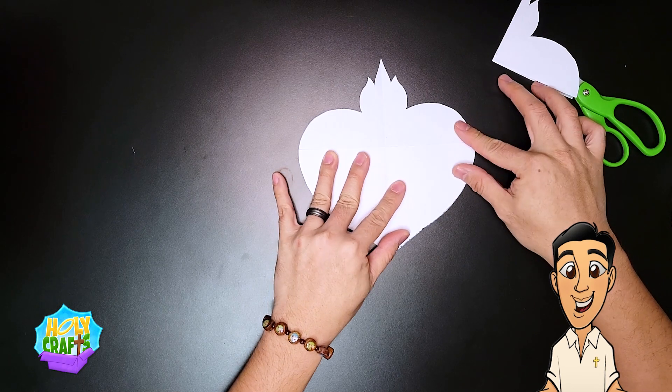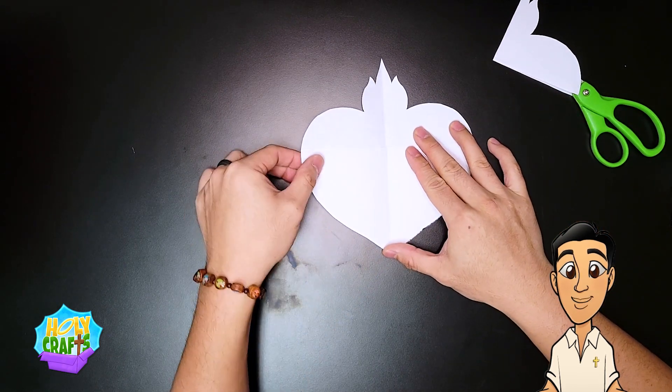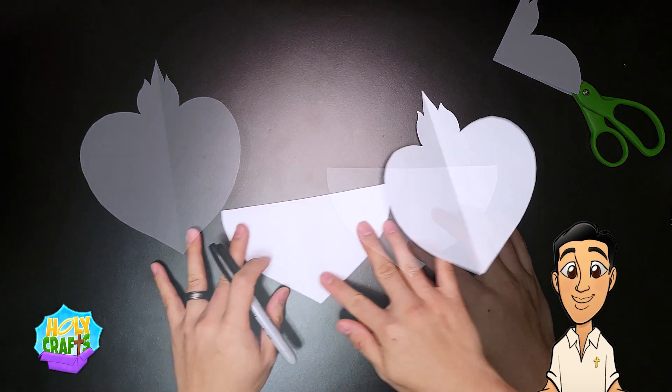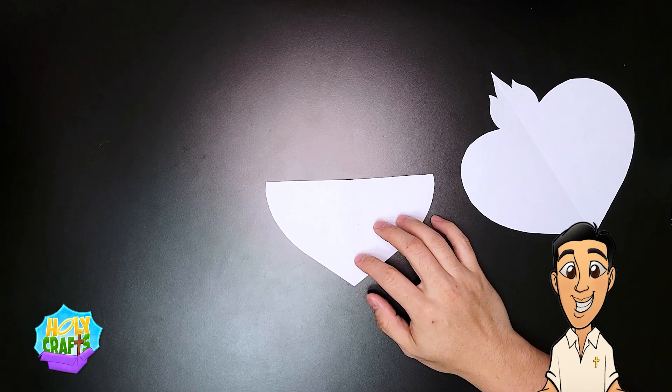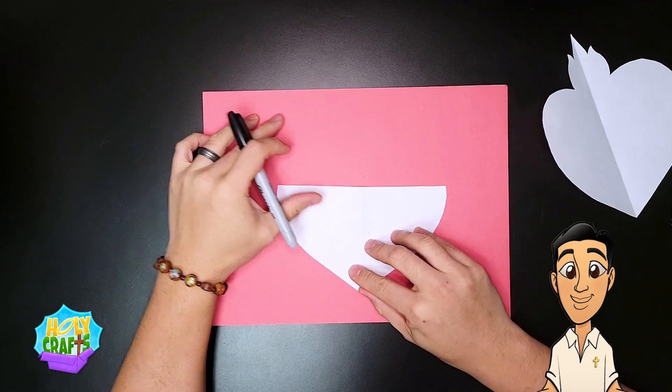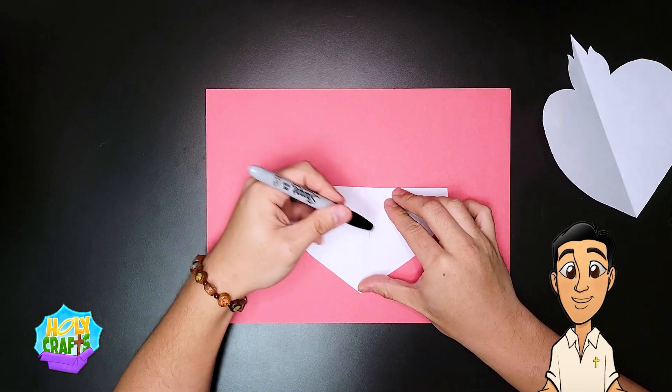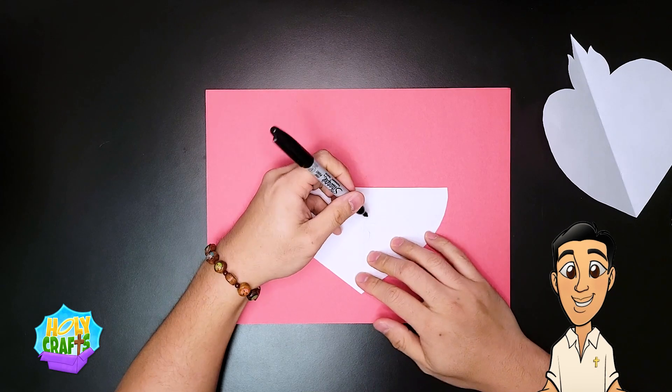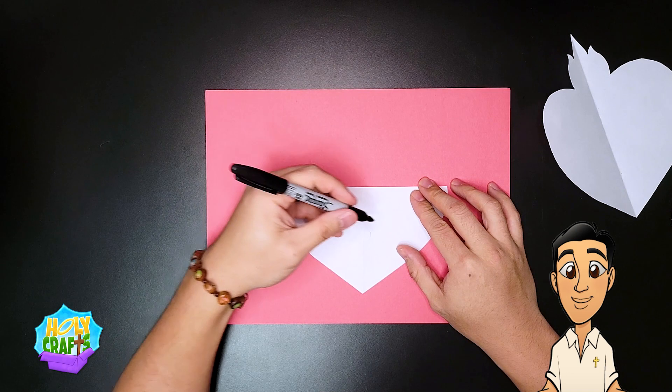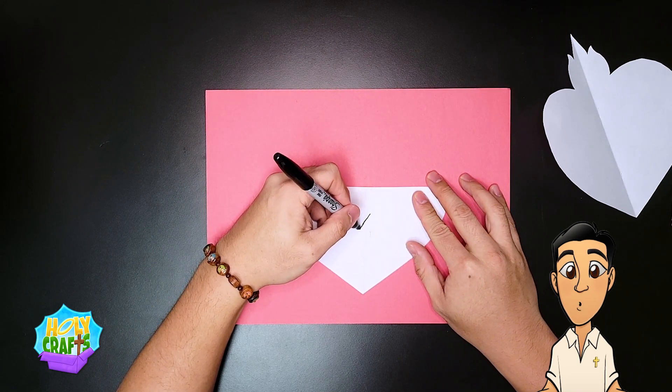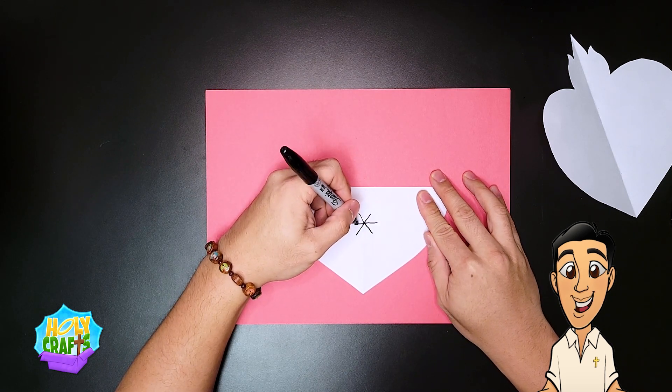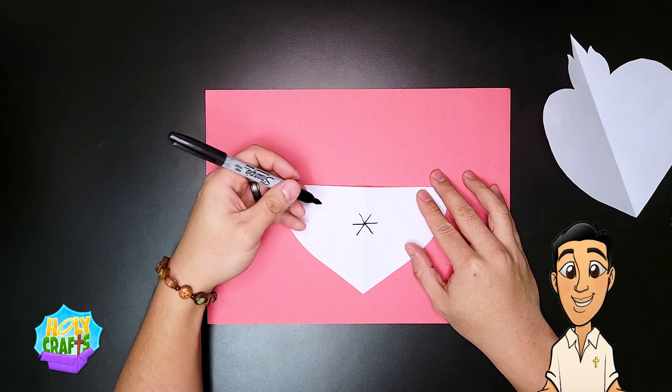Now on the very front, we're going to be decorating the pocket by drawing lilies. St. Joseph's heart is known to have lilies right on the front. So the easiest way to draw a lily is to first draw an X, and then right in the middle, draw a straight line. So it almost looks like an asterisk, like a star.